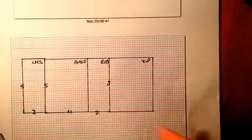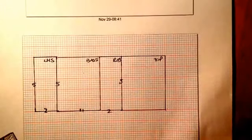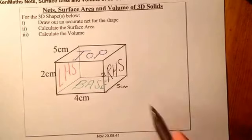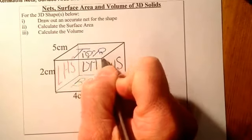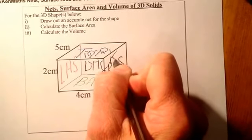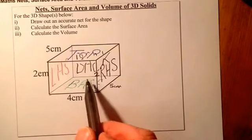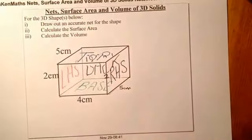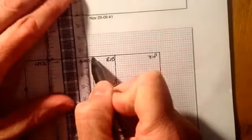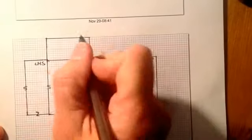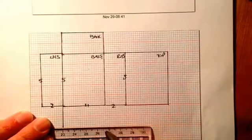Opposite sides — like the left-hand side and right-hand side — should be the same size and the same shape, and the base and the top should be the same as well. I'm now going to look at the back, and I can see that the size of the back is going to be four along and two up. I'm going to join that onto the base, as if I'm folding it down. I'll also fold down the front to this side here, and that should be the net of the cuboid completed.